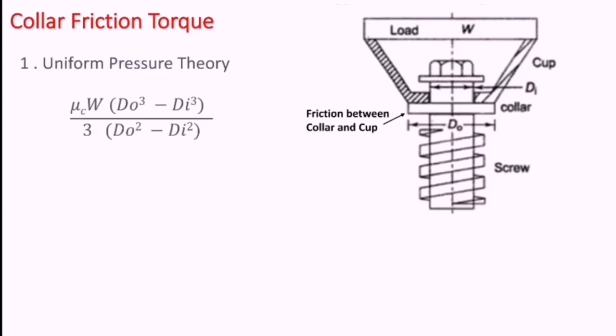According to uniform pressure theory, the torque is given as: T equals µc multiplied by W, multiplied by (d0 cubed minus di cubed) divided by 3 times (d0 squared minus di squared). Here µc is the friction coefficient between the collar and the cup, d0 is the outer diameter of the collar, and di is the inner diameter of the collar.